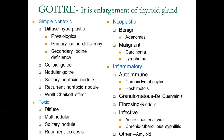Neoplastic goiter will be discussed in a separate topic on thyroid neoplasm, focusing on malignancy of the thyroid gland. The last category is inflammatory goiter, which includes autoimmune thyroiditis such as chronic lymphocytic thyroiditis and Hashimoto's thyroiditis, granulomatous thyroiditis such as de Quervain's thyroiditis, fibrosing or Riedel's thyroiditis, infected thyroiditis from acute bacterial and viral infections, chronic infections like tuberculosis and syphilis, and conditions involving amyloid deposition.